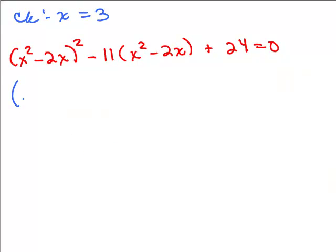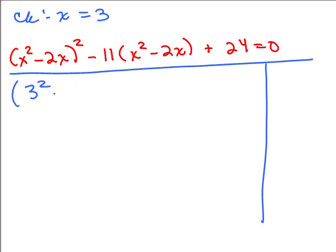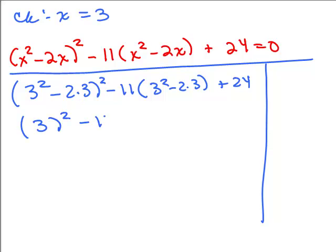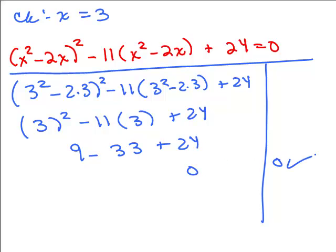Now we're on to 3. So (3²-2×3)²-11(3²-2×3)+24. So what do we have inside the parentheses here? We've got 9-6 which is 3, squared, minus 11 times, again, it's 9-6 which is 3, plus 24. So I have 9-33+24 which is 0. And that checks.